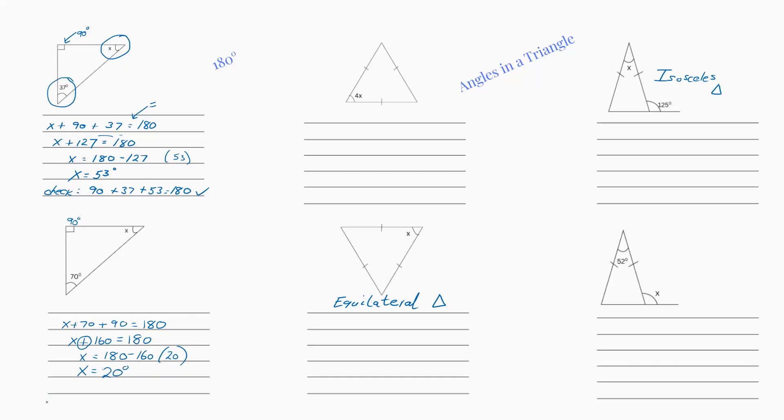So we know that x equals 20 degrees. I'm just going to check my answer. So I have 90 plus 70 plus 20, which gives us 180 degrees.